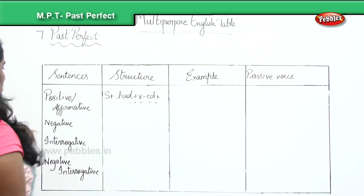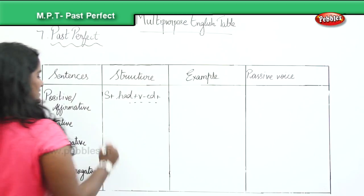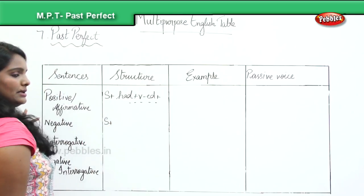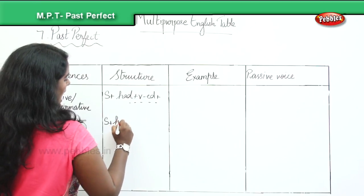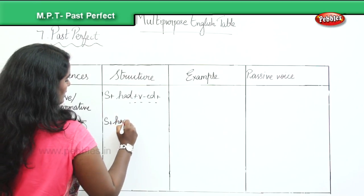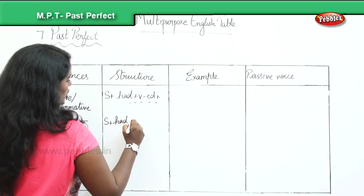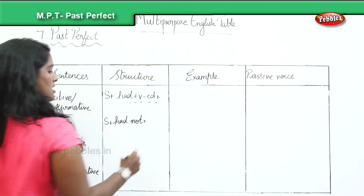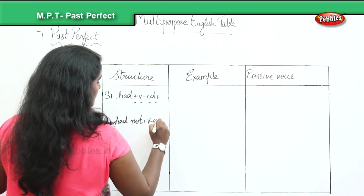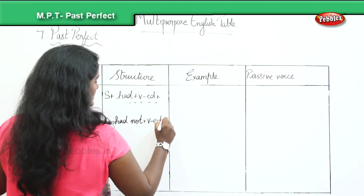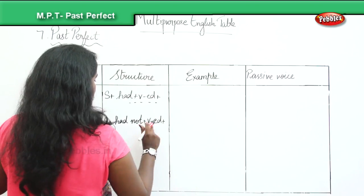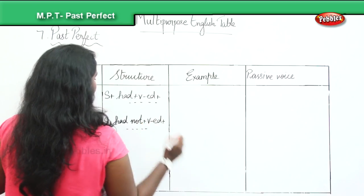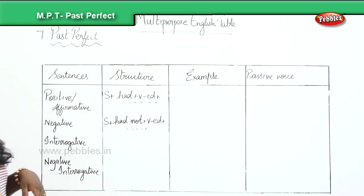Moving on to the negative: subject plus had not, plus the ed form of the verb, and the remaining part of the sentence.